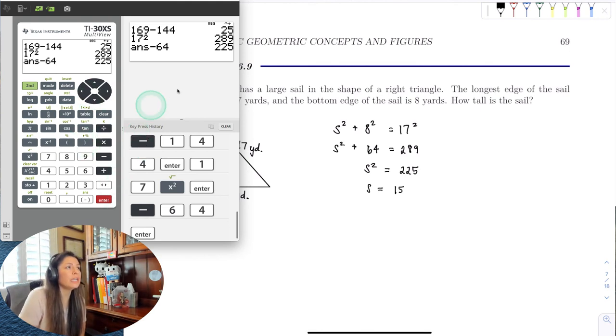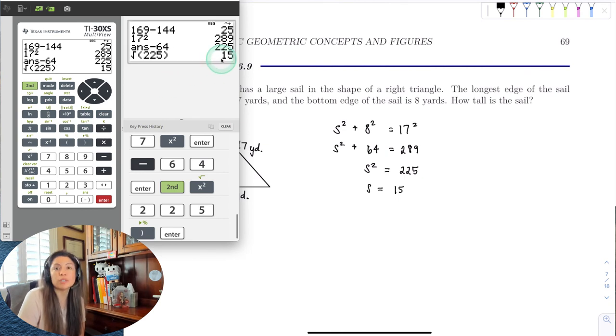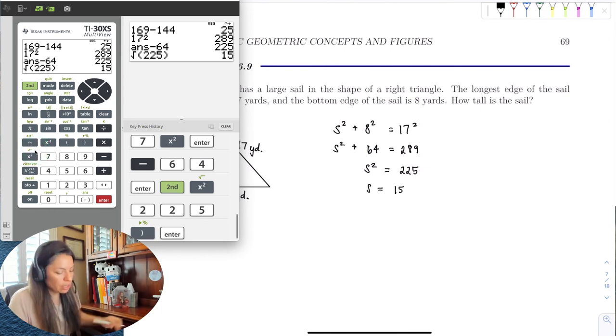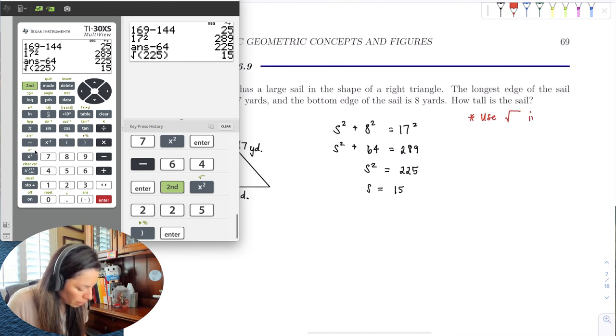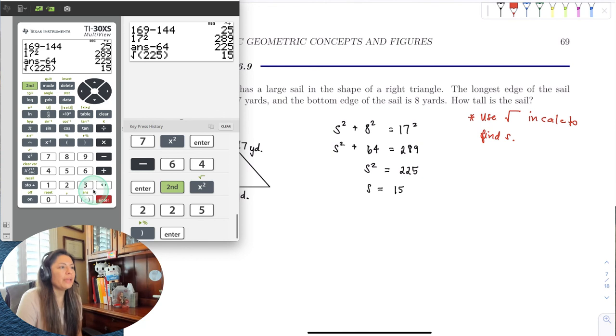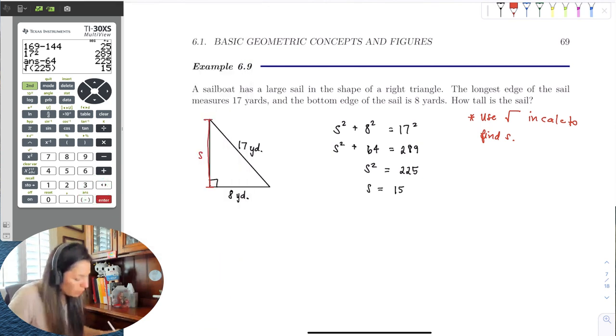Now S is going to be equal to 15. But if you didn't know that, you could definitely take the square root by hitting second and that square button. See the little square root here? And put 225. And it will give you only the principal square root. It knows that you're only doing the principal square root. So then you get 15. It's really up to you unless you want to run through all the powers of 2 of all the integers you can. But you can just simply just use that square root button as well. So I'll write that over here in calc to find S. So we didn't originally have S so I wouldn't box that. We put that there as a placeholder for the formula. So let's write out a nice little sentence. So the sail is 15 yards.